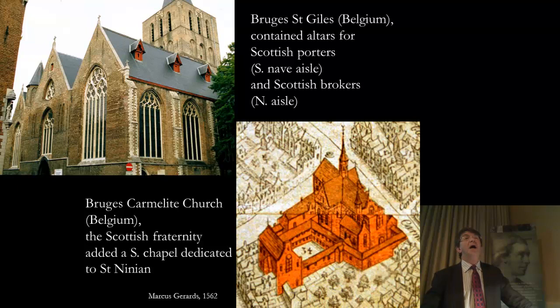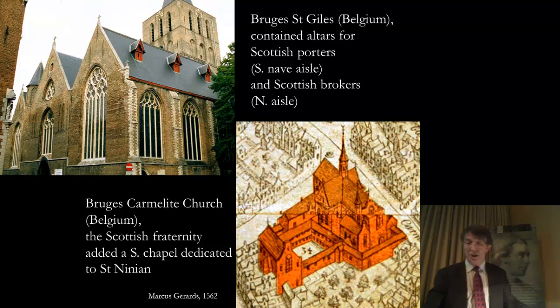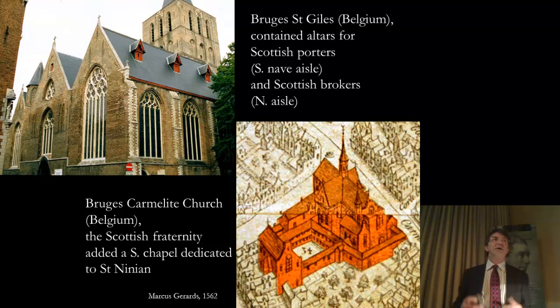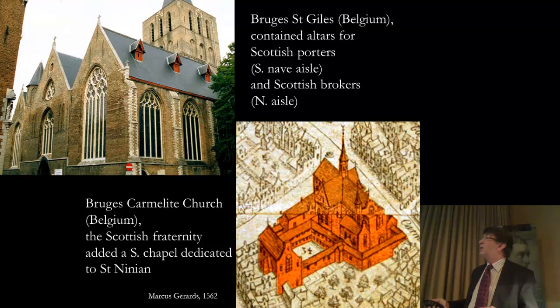We also have to remember that there was a resident community of Scots, particularly in Bruges, and several churches did have chapels or altars that were particularly associated with the Scottish community. Probably one of the most important was the Church of St Giles, which contained altars for the Scottish porters in the South Nave Aisle and also the Scottish brokers in the North Aisle. And the Carmelite Church's Scottish fraternity added a South Chapel dedicated, as you might expect, to St Ninian.